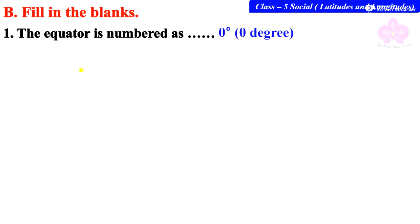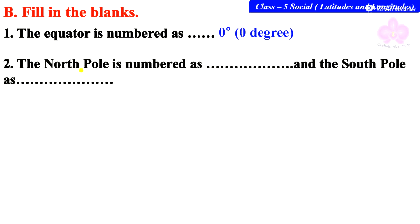Answer is 0 degree. Next, the North Pole is numbered as dash and the South Pole as dash. It is 90° North and 90° South.